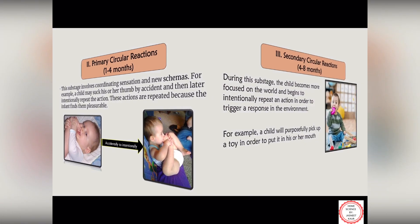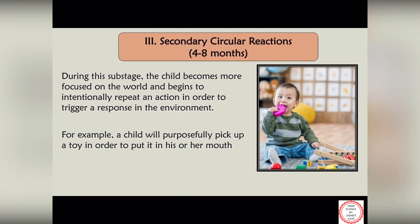Moving on to the third sub-stage: secondary circular reactions. This sub-stage occurs between four months to eight months. In this stage the child becomes more aware of his surroundings and understands that their actions have an impact on the environment around them.